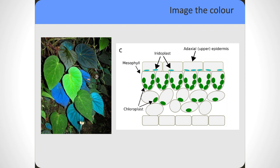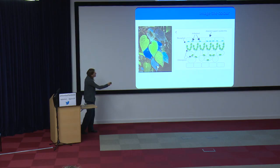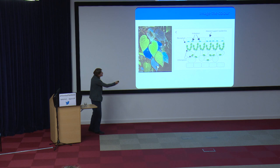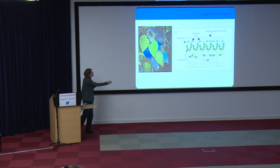Whereas some Selaginella have their iridescence right on the surface of the leaf, others such as the Begonia actually produce their iridescence within the cell. This plant, Begonia pavonina — also known as the Peacock Begonia because of its vivid blue and green colouration — has structures called iridoplasts in its upper epidermis, and these are what causes the iridescence. To look at this structural colour, you need to image not just the leaf as a whole, but the individual structures that produce that colour.